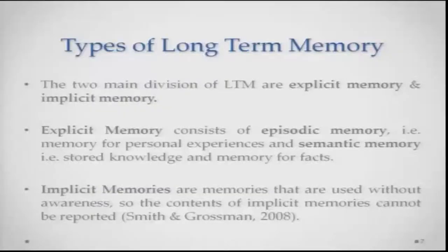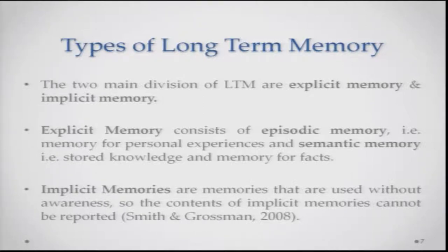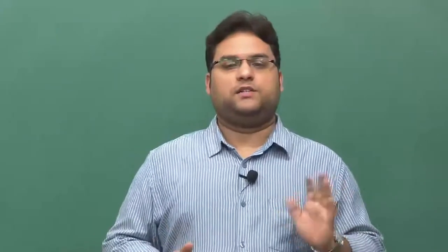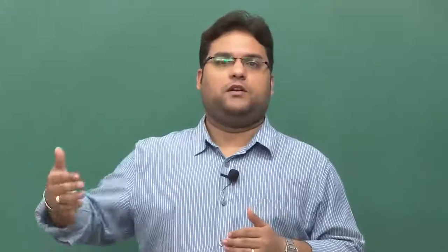Implicit memory is basically memories that are used without awareness — you use those memories without consciously being aware of them, so the contents of implicit memory cannot be reported. For example, the fact that I learned how to drive a car and drive almost every day doesn't mean I can describe exactly how I learned to maneuver the brakes or control the pedals. It was a procedure, a skill I acquired, and though I've retained it and can demonstrate it by driving, giving a description is difficult. Implicit memory cannot be reported, but can be demonstrated by action.